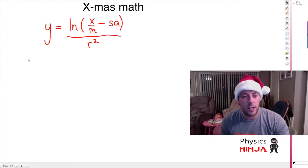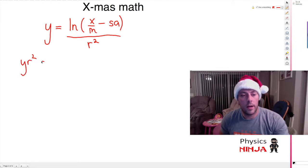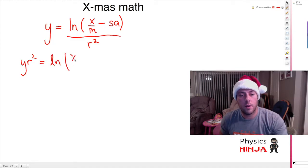First thing I do is I bring the r squared over on this side. Let's go over here and just rewrite this term. It's the ln of x over m minus sa.